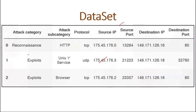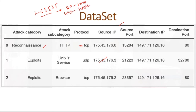Now let me show the dataset on which we will apply machine learning. I've taken just three logs here, but we have a whole dataset with 1 lakh (100,000) rows. In this dataset we have the attack category — whether it's reconnaissance, exploits, fuzzing, and many other attacks. We have protocol, source IP, destination IP, source port, and destination port. By reading this data we will find which ports are most vulnerable, which source IPs or network devices are more vulnerable, and we will detect what type of attack it is.